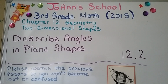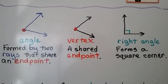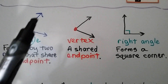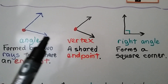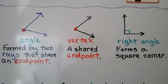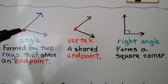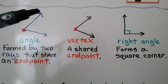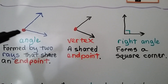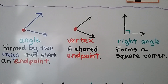Lesson 12.2: Describe Angles in Plane Shapes. We're going to describe angles in two-dimensional shapes. This is an angle. It's formed by two rays — a ray coming up this way and a ray coming this way — and they share an endpoint.